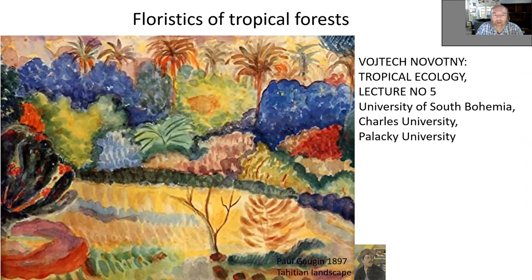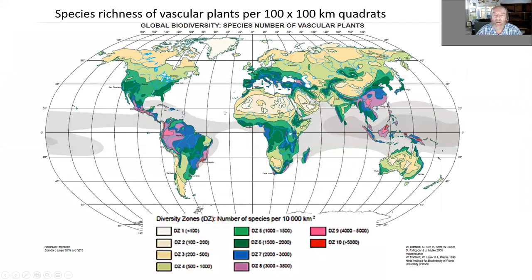We will be looking at the floristics of tropical forests. We can't supplement or even replace the proper botanical systematic courses, but we will be looking at a few typical features of the tropical vegetation and some major taxa. This is just a reminder of the regional diversity of vascular plants with the tropical maxima.